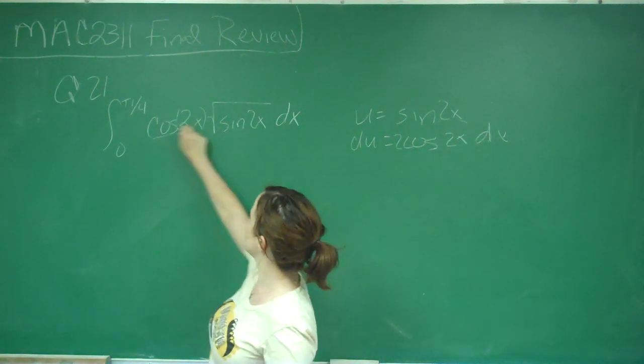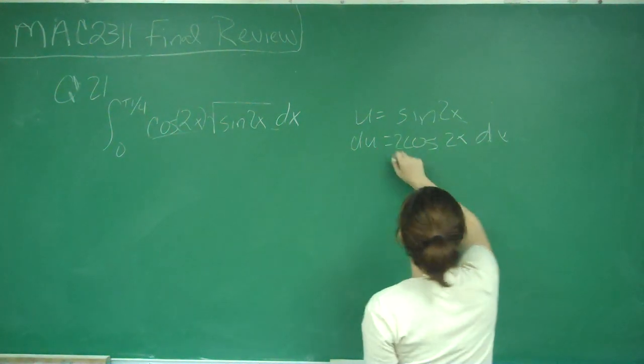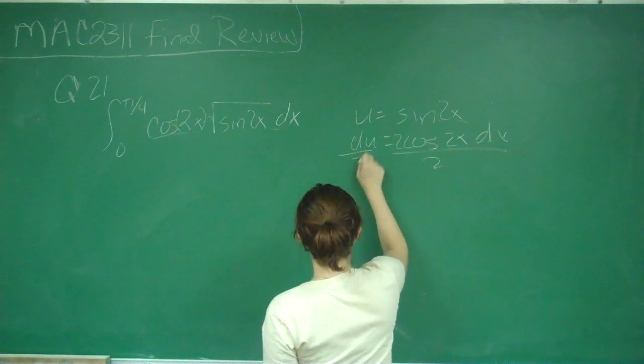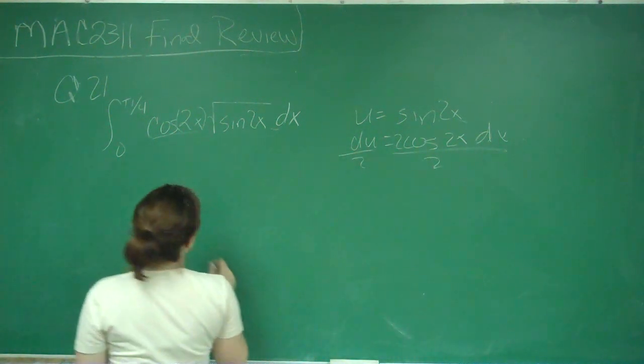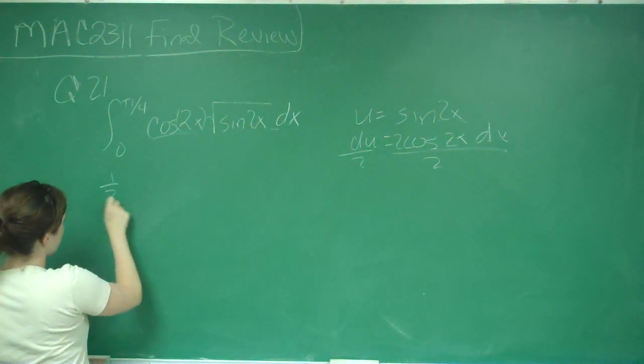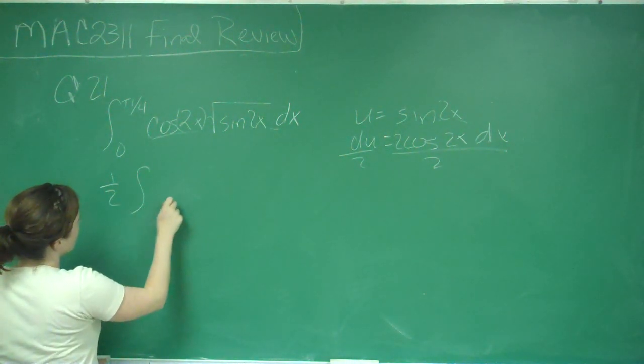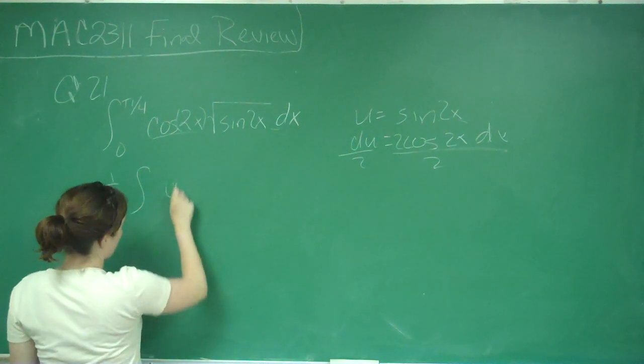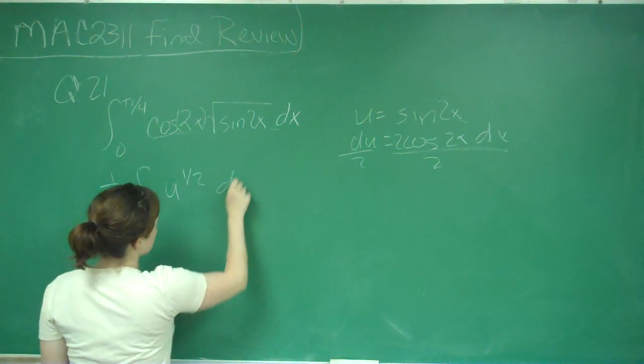That's good because we have cosine 2x dx, and what we are going to do is divide both sides by 2. And so we get 1 half integral of u to the 1 half du.